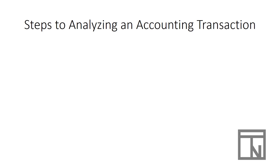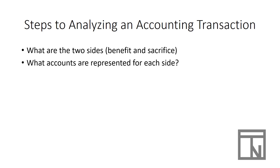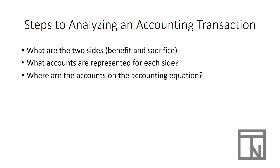Anytime you analyze an accounting transaction you're going to be asking six basic questions. The first is: what are the two sides of the transaction? Every transaction has a benefit and a sacrifice. The next question is: what accounts are represented by each of those sides? Then, where are those accounts on the accounting equation? Once we understand that, we can decide whether those accounts are increasing or decreasing that side of the accounting equation.